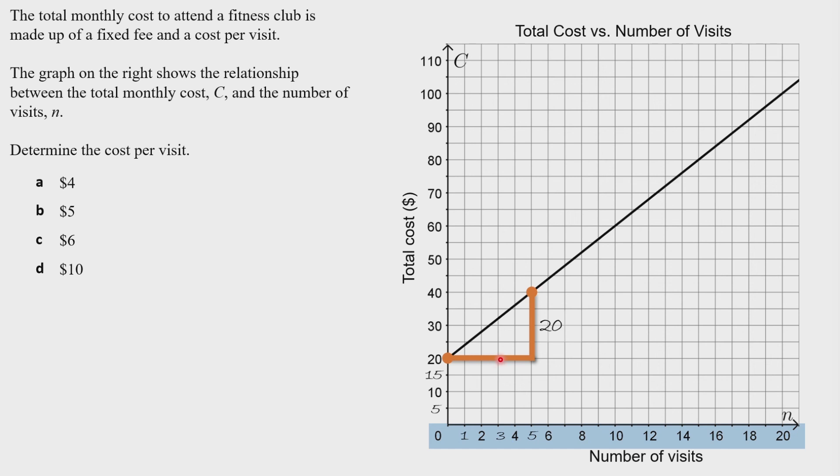Looking at our line, how many squares do we have horizontally? One, two, three, four, five squares. According to our axis, each square is 1, which means this must be 5 long.